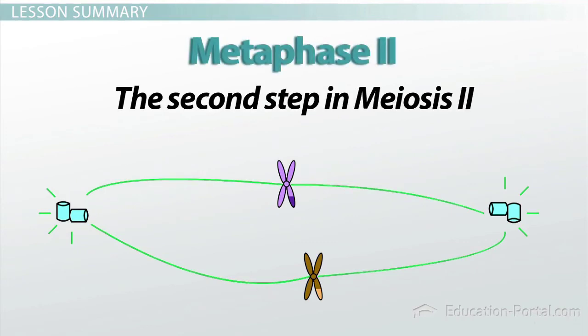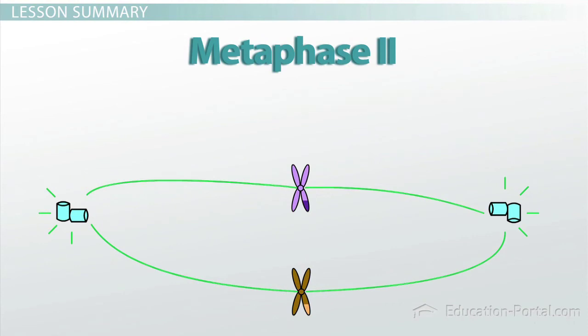Metaphase II is the second step in meiosis II. By metaphase II, each chromosome is aligned at the metaphase plate.